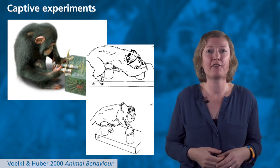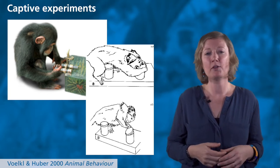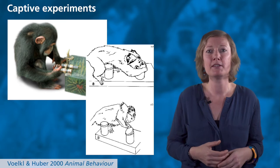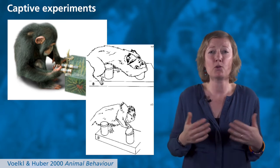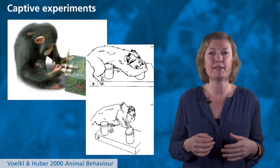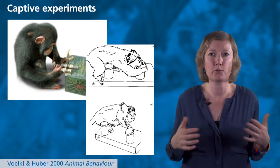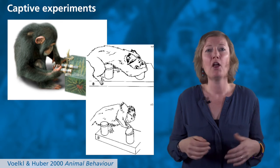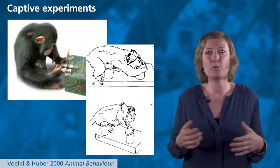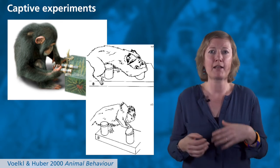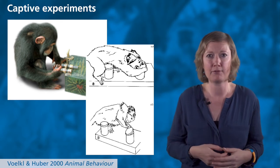One limiting factor of the dyadic social learning experiment is that it does not reflect at all the complexity of natural social groups, nor how knowledge spreads within a group or at the population level.